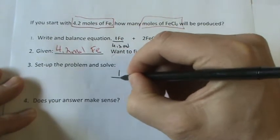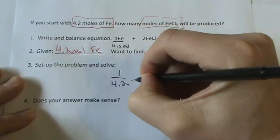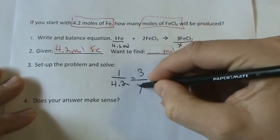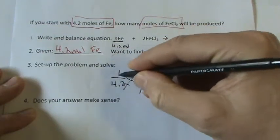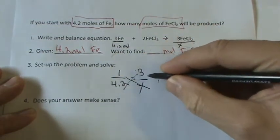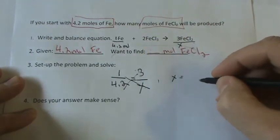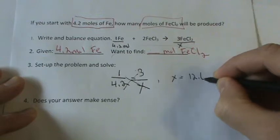If we set it up, 1 over 4.2 equals 3 over x. I cross multiply. 1 times x equals x, 3 times 4.2 is 12.6.